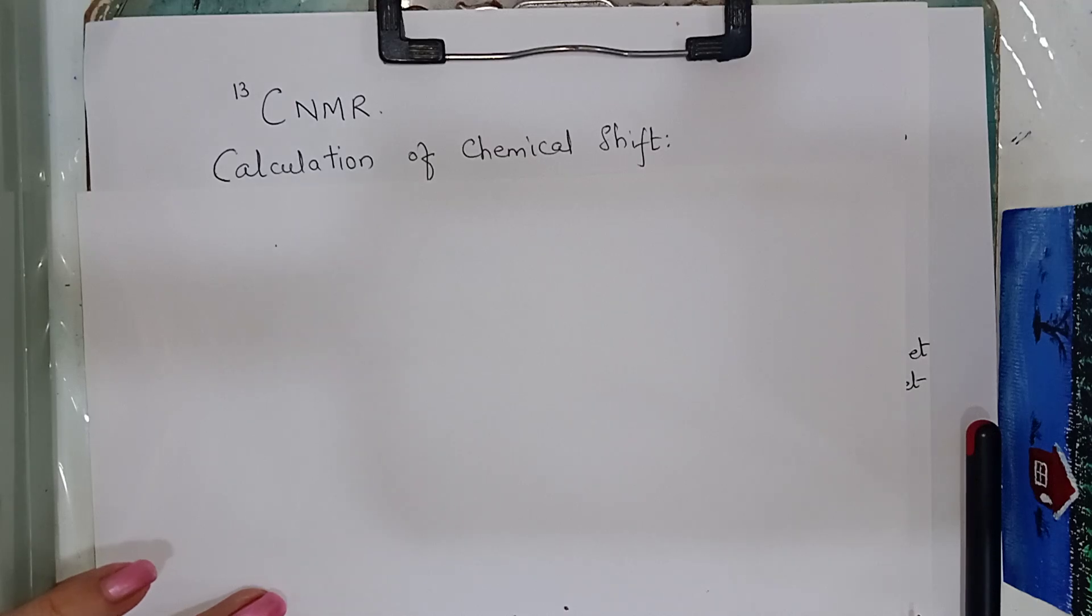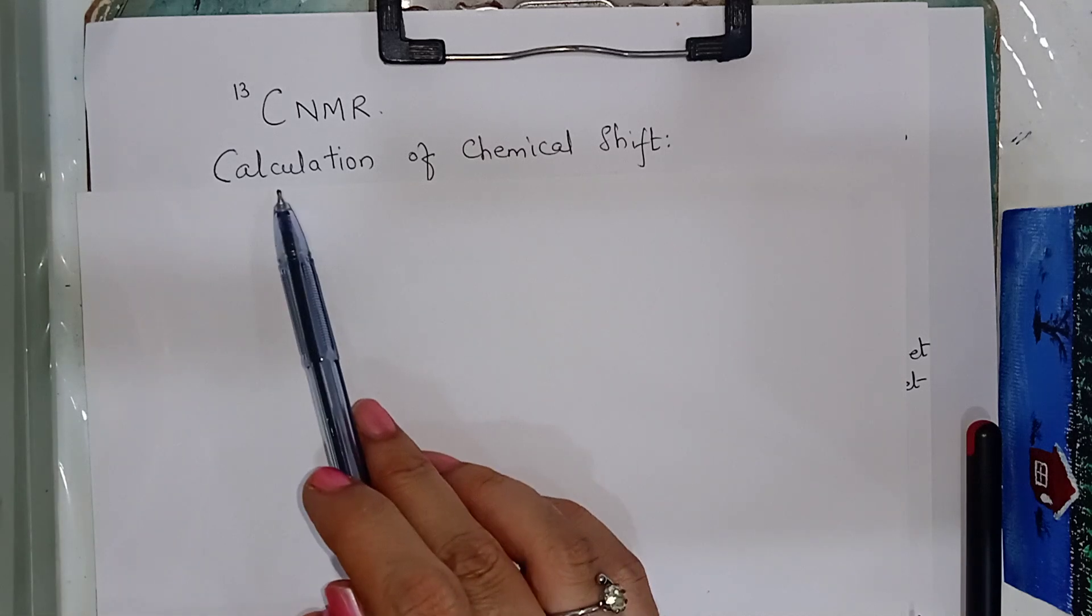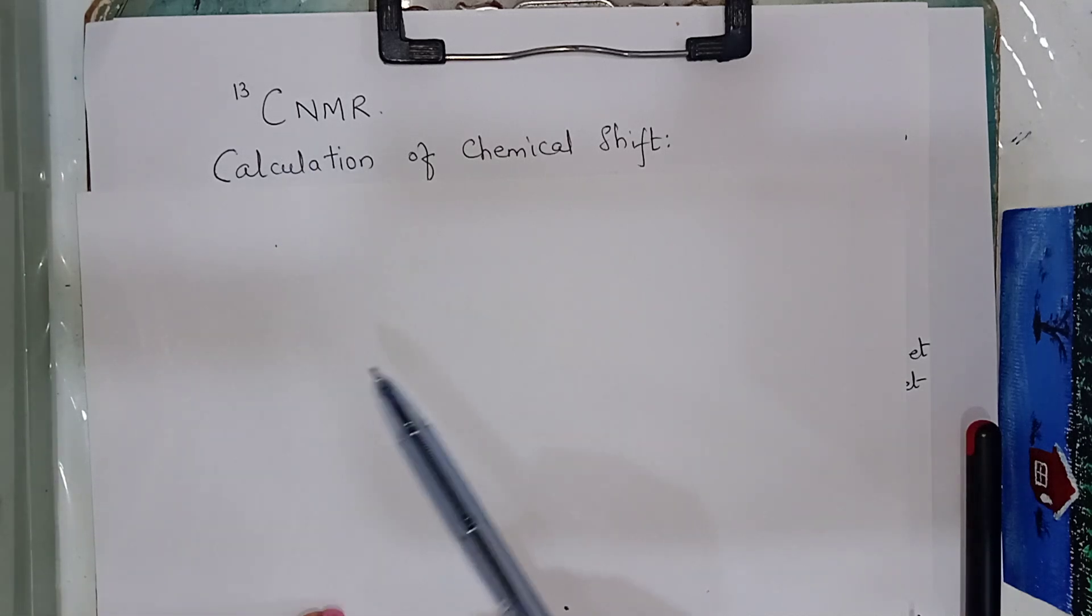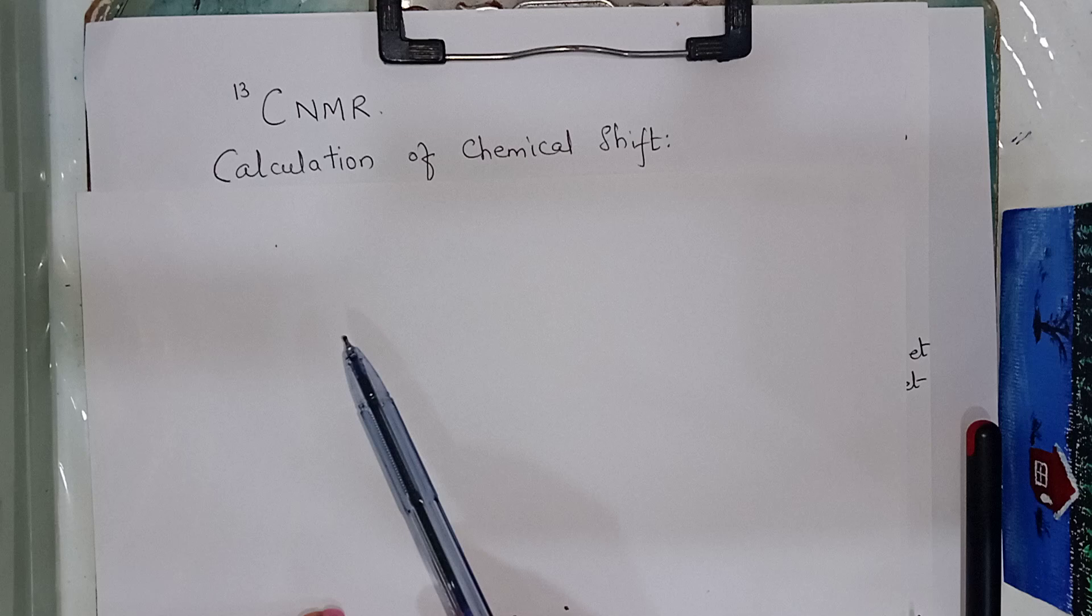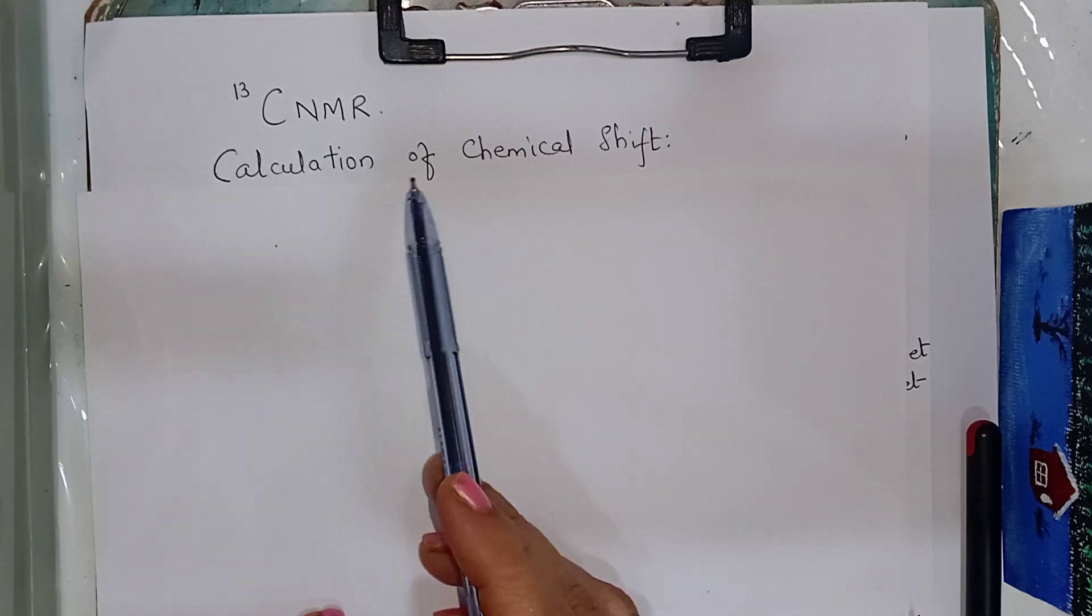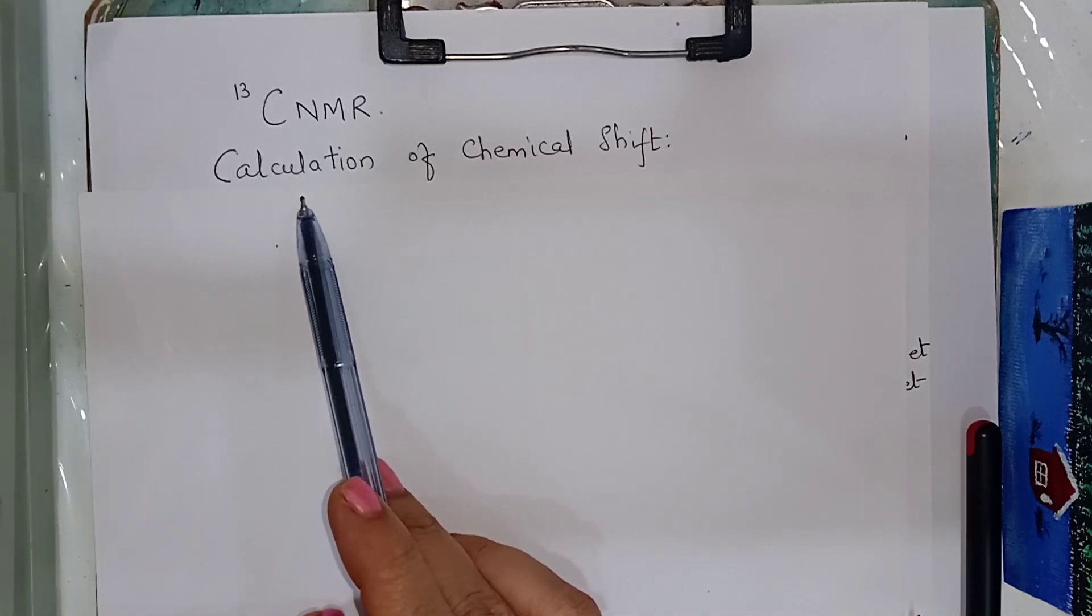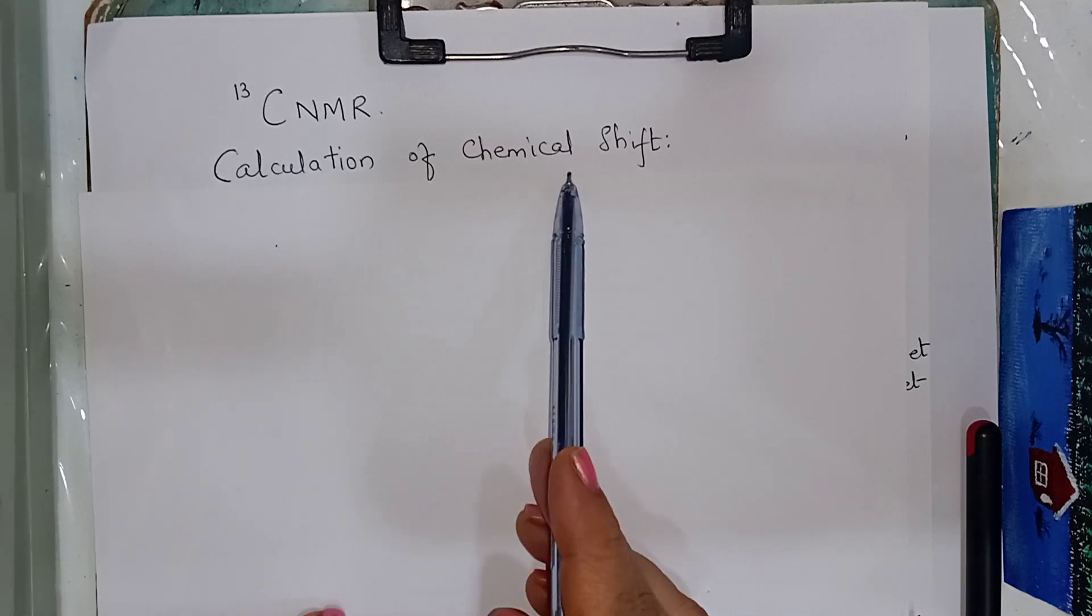Hello everyone, C13 NMR, carbon isotope 13 having an abundance of 1.1%. We are studying spectroscopy. Today, topic is calculation of chemical shift.